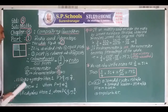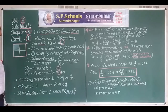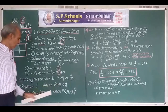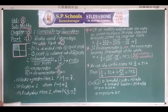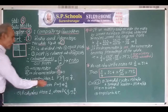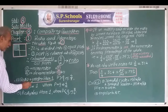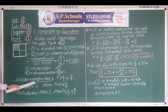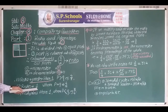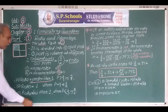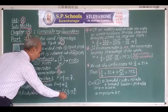Now, what are the types of ratios? Ratios are of three types: ratio greater than one, ratio equal to one, and ratio less than one.